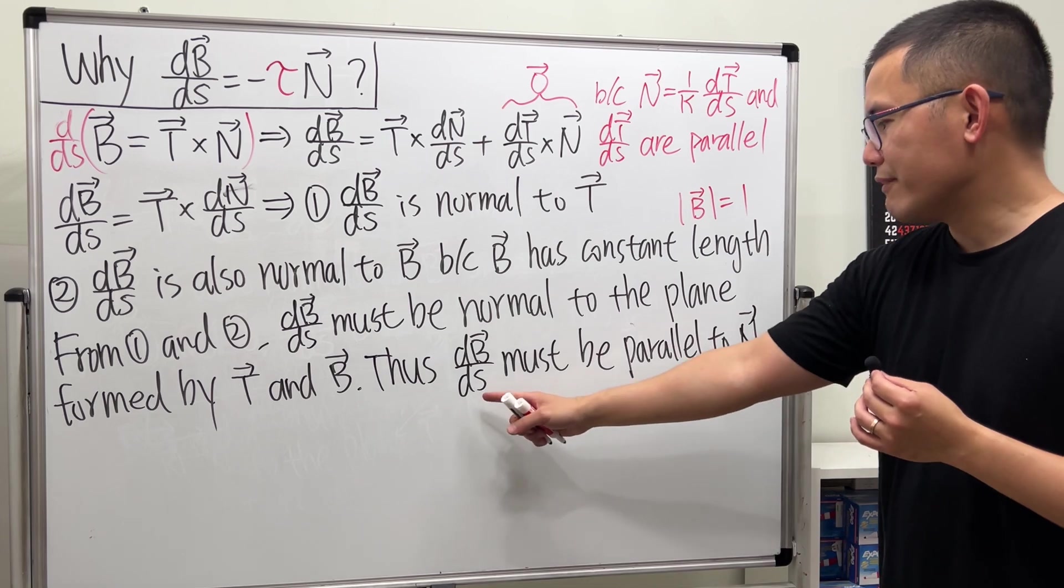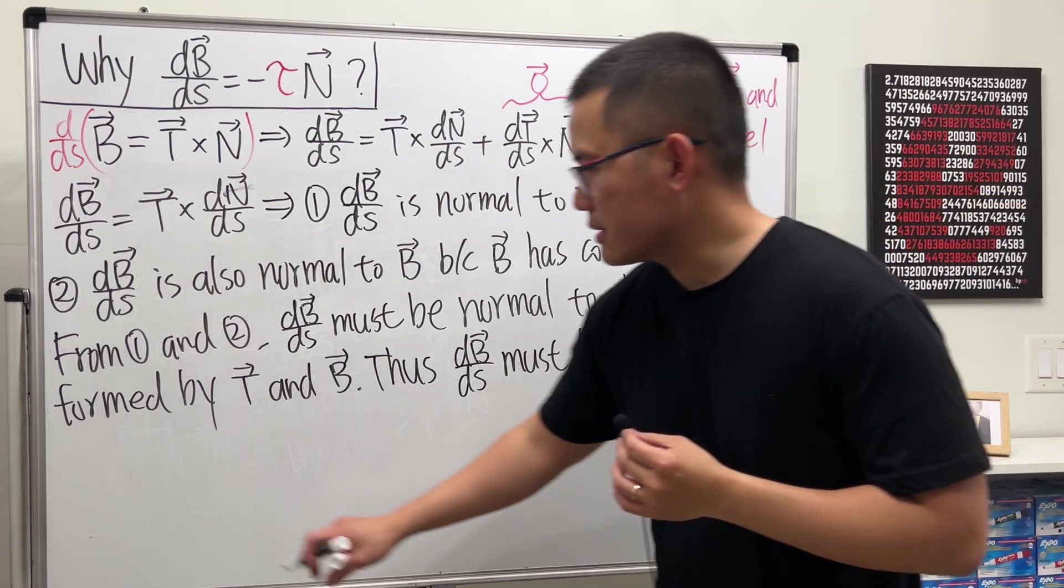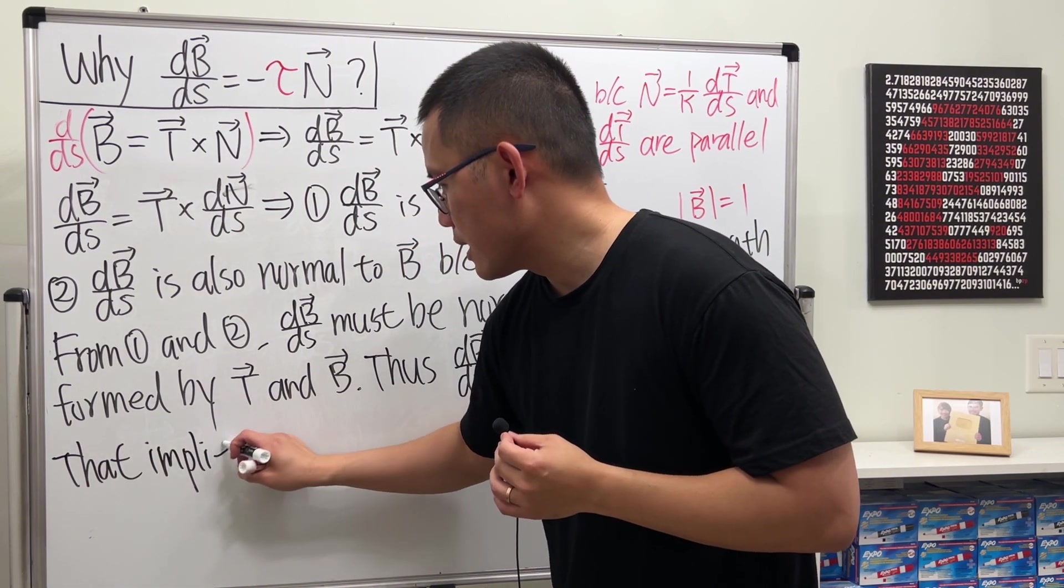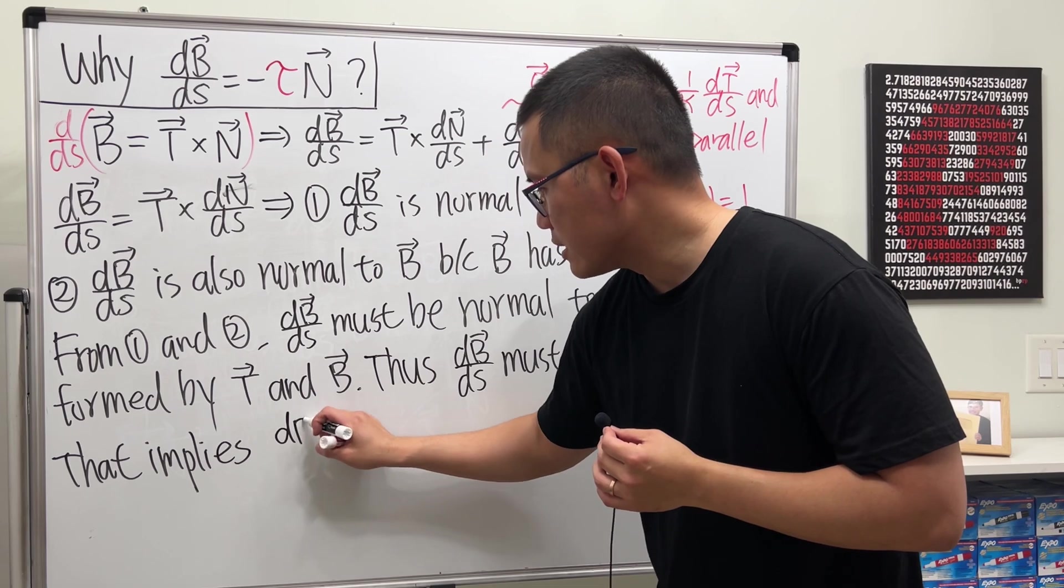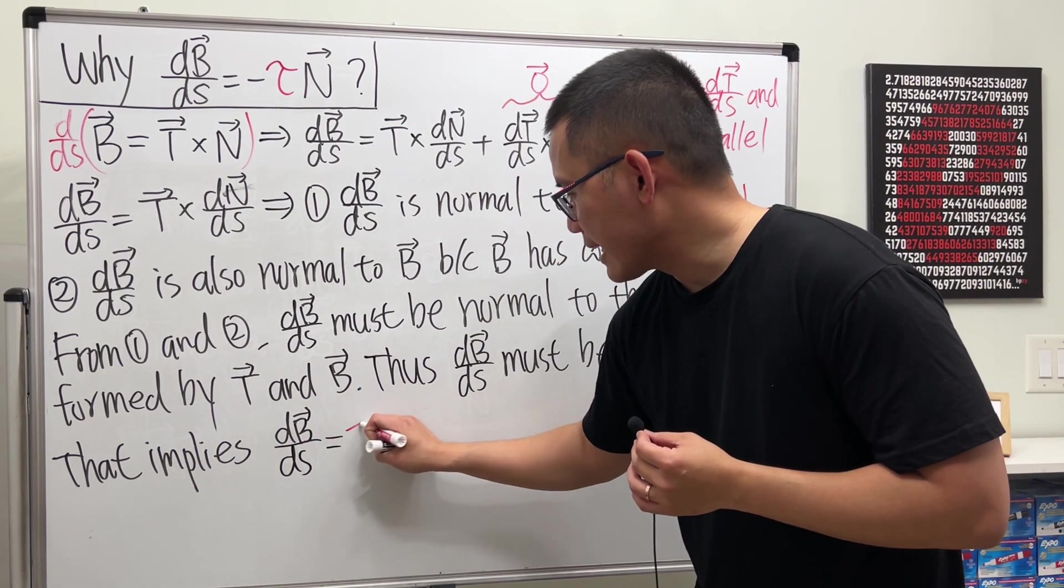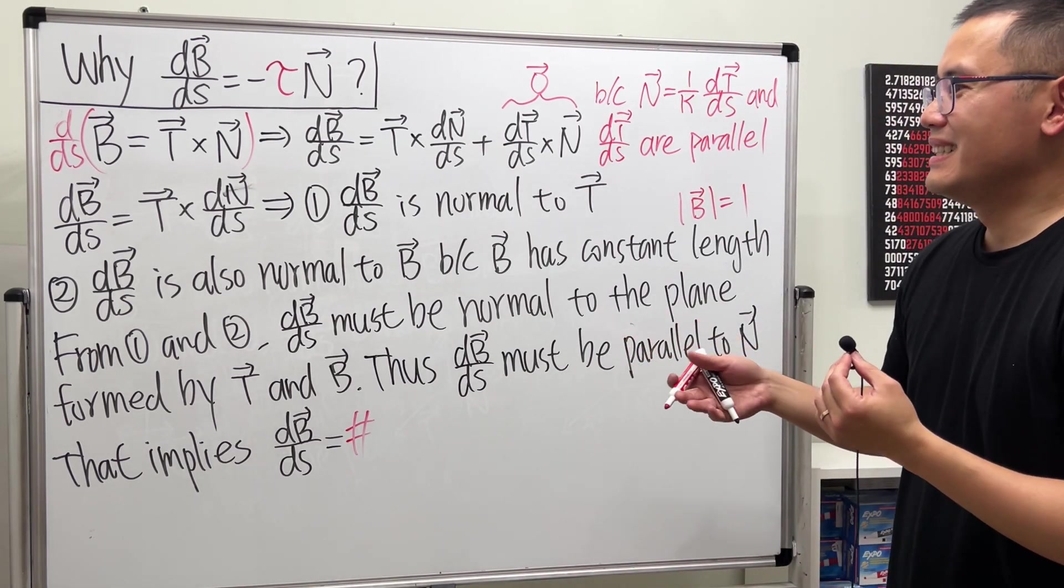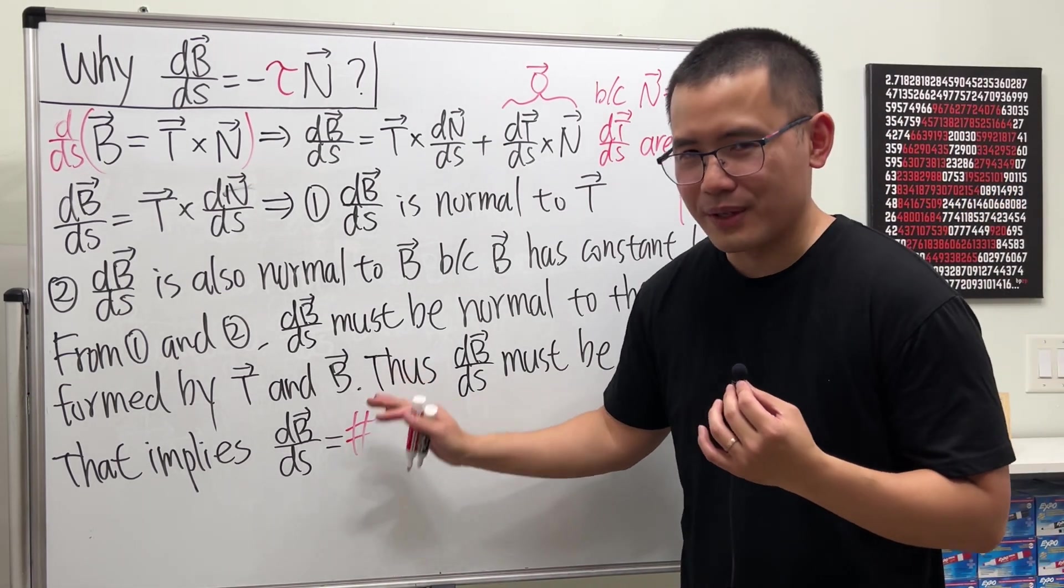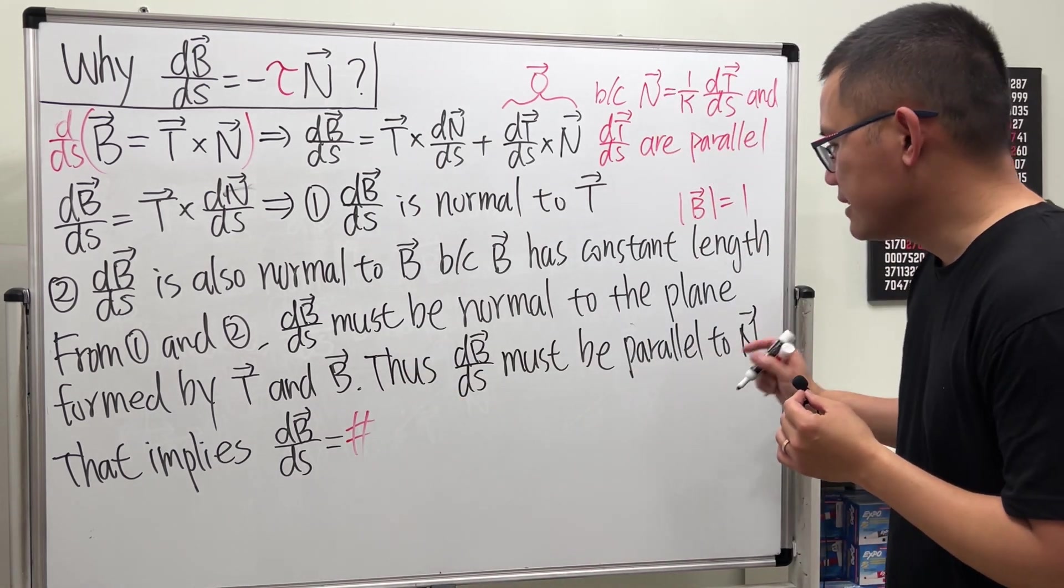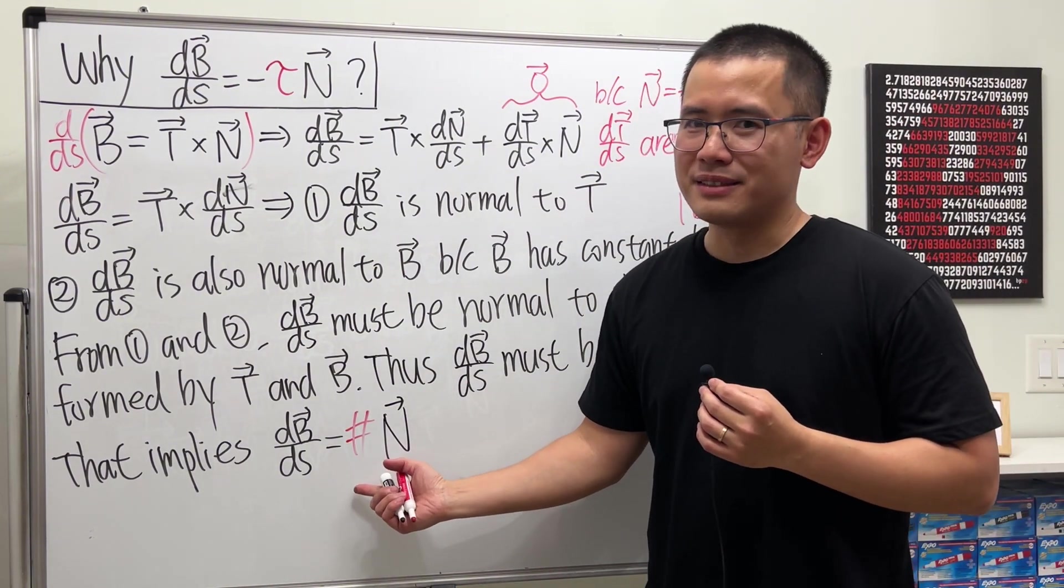And now, when we have two vectors that are parallel, what does that mean? That means our first vector, dB/ds, is equal to a constant multiple—because I've run out of letters, I'm just going to use a hashtag. Well, this means a number, okay? It's just going to be a constant multiple of the second vector, which is N.